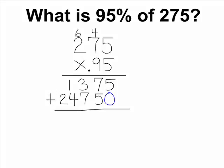Now we simply add all of our digits together. 5 and 0 is 5. 7 and 5 is 12, carry the 1. 3, 7 and 1 is 11, carry the 1. 1, 1 and 4 is 6. And 2 and nothing is simply 2.